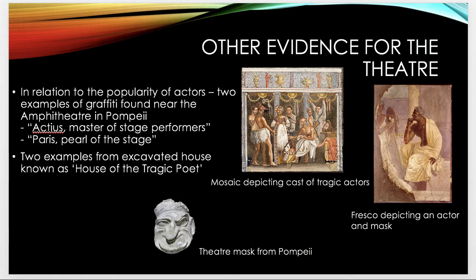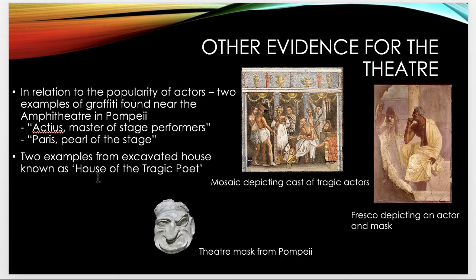Other evidence for the theatre includes mosaics found in houses — a mosaic depicting the cast of tragic actors, a fresco depicting an actor in a mask, and we even find a theatre mask in Pompeii. These two pieces are from the house known as the House of the Tragic Poet. We also find graffiti, such as 'Actius, Master of Stage Performers' and 'Paris, Pearl of the Stage,' which tells us about the popularity of actors, some of whom were visiting performers from Rome with their own fan clubs.